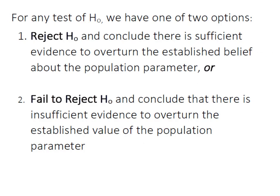For any test of a null hypothesis, we have one of two options. We can reject H0, in which case we're going to conclude that there's sufficient evidence to overturn the established belief about this population parameter. Or our other choice is fail to reject H0. And when we fail to reject H0, we're going to conclude that there's insufficient evidence to overturn this established value of the population parameter.